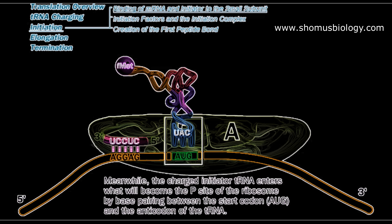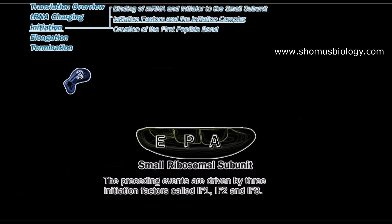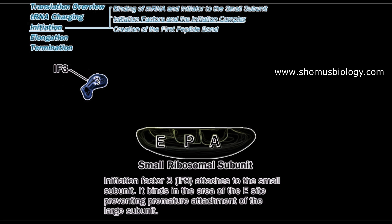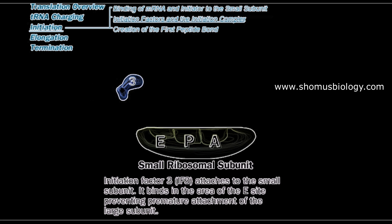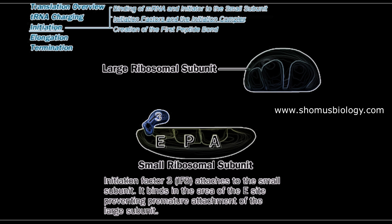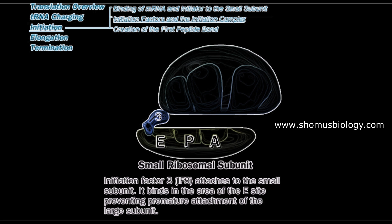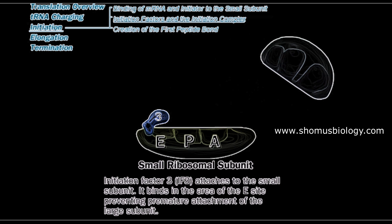Before going there, let's talk about the process of initiation and how exactly it is done, because there will be involvement of initiation factors. IF3, initiation factor 3, associates itself to the small ribosomal subunit, particularly to the E site of the small ribosomal subunit. When IF3 binds itself to the E site, it blocks the E site so no further tRNA can interact to the E site of the ribosome. Here comes the large subunit, and this IF3 prevents the large subunit from associating to the small subunit.